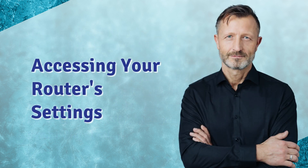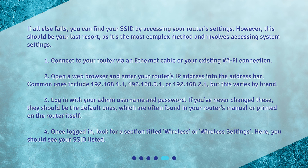Accessing Your Router Settings. If all else fails, you can find your SSID by accessing your router's settings. However, this should be your last resort, as it's the most complex method and involves accessing system settings. First, connect to your router via an Ethernet cable or your existing Wi-Fi connection. Then, open a web browser and enter your router's IP address into the address bar. Common ones include 192.168.1.1, 192.168.0.1, or 192.168.2.1, but this varies by brand.